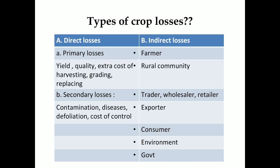In case of indirect loss, every person in the chain bears the loss — for example, farmer, rural community, trader, wholesaler, retailer, exporter, consumer, environment, and government.